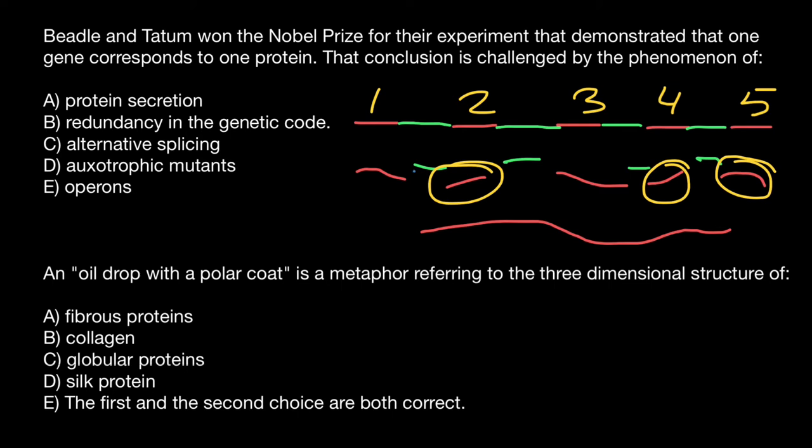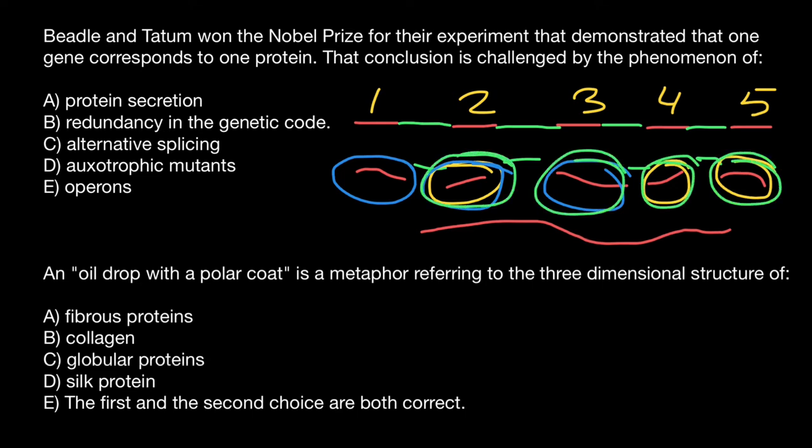So this is one variant. Another variant would be that this fragment would be present, this fragment, and this. This can be a third variant. And yet another combination can be, for example, that this fragment, this, this, and this would be present in the final messenger RNA, which specifies certain protein.